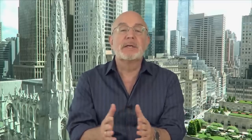Let's take a look at a chart of DIA, also known as the Diamonds, which is an ETF that mirrors the Dow Jones Industrial Average. As you can see, the index has generally rallied pretty steadily over the last 12 months with some occasional pullbacks. Now let's go back to late June of last year. As you can see, the DIA was trading around 250 in late June.